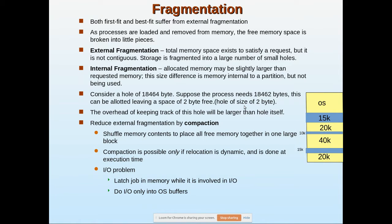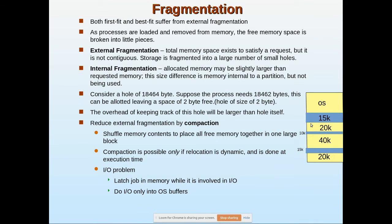In the last video we covered external fragmentation and internal fragmentation. External fragmentation is when free memory space is scattered here and there. Even if the total space is available, we are not able to allocate it to a process because all the free spaces are fragmented.